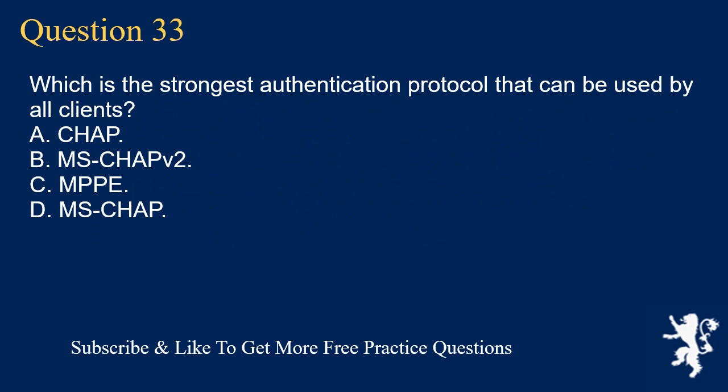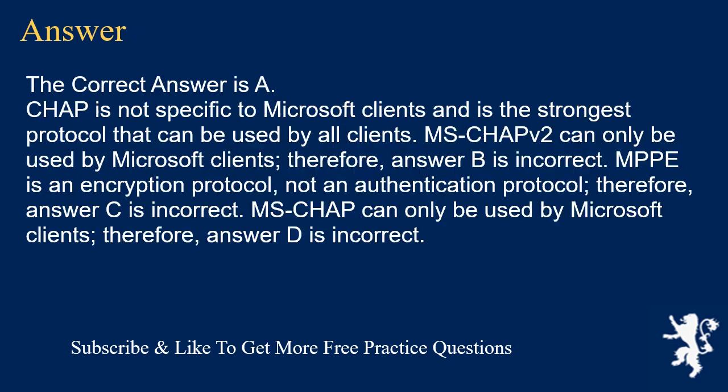Question 33. Which is the strongest authentication protocol that can be used by all clients? A. CHAP. B. MSCHAP 2. C. MPPE. D. MSCHAP. The correct answer is A. CHAP is not specific to Microsoft clients and is the strongest protocol that can be used by all clients. MSCHAP 2 can only be used by Microsoft clients. Therefore, answer B is incorrect. MPPE is an encryption protocol, not an authentication protocol. Therefore, answer C is incorrect. MSCHAP can only be used by Microsoft clients. Therefore, answer D is incorrect.